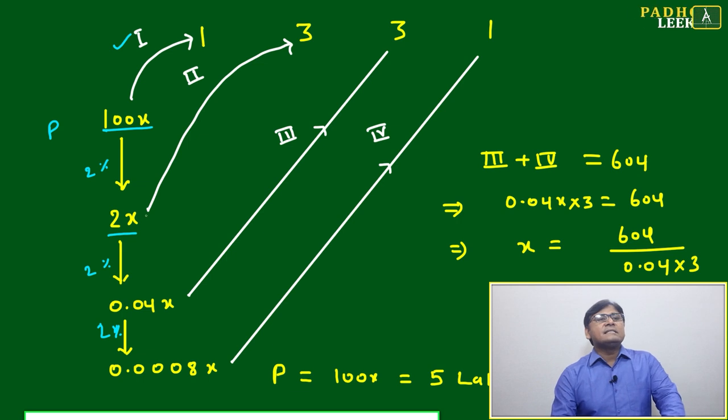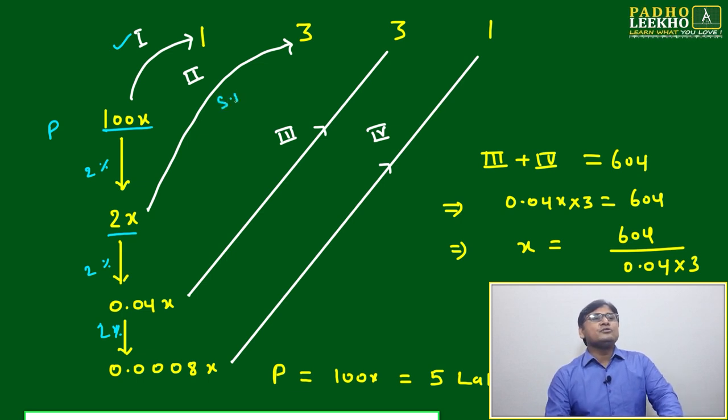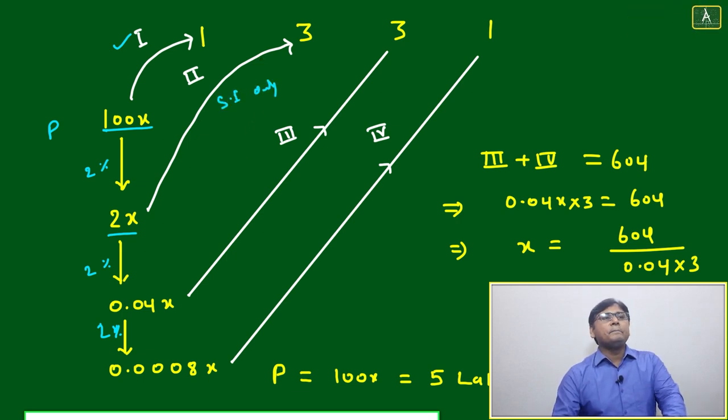The second line gives simple interest only. 2x multiplied by 3 becomes 6x. This is only simple interest.